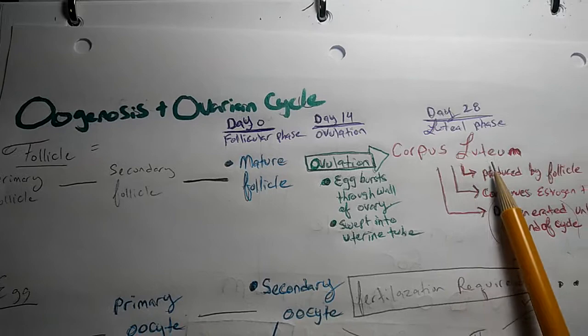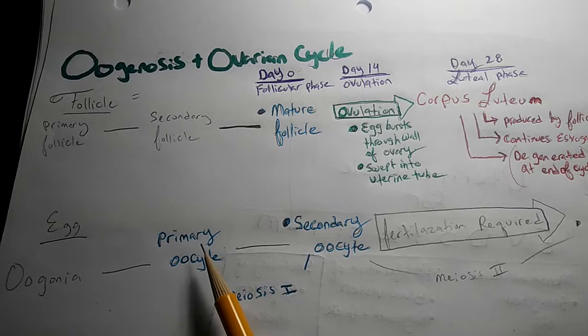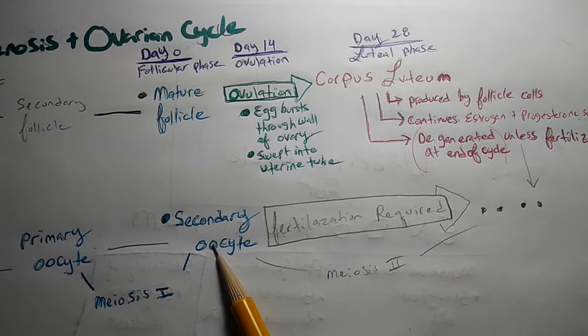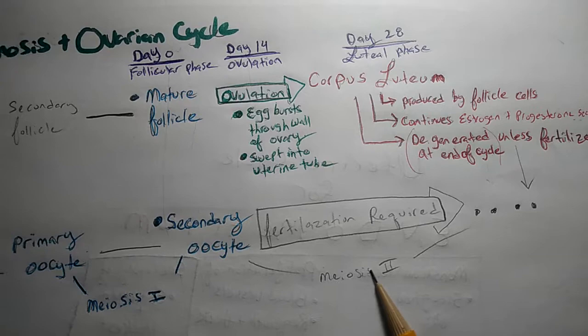For the egg, we have the oogonia, turning into a primary oocyte. The meiosis 1 phase function is to convert the primary oocyte into a secondary oocyte. It's just a phase. In order for secondary oocyte to become a fertilized egg, the meiosis 2 cannot be activated again until fertilization occurs.